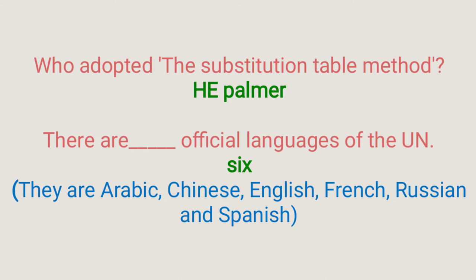There are six official languages of the UN (United Nations): Arabic, Chinese, English, French, Russian, and Spanish.